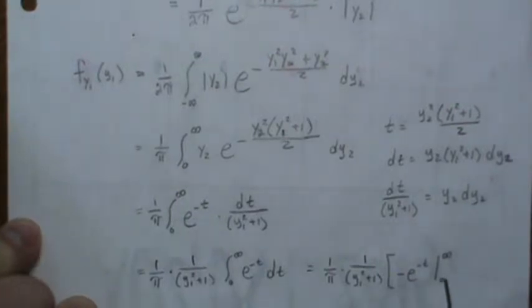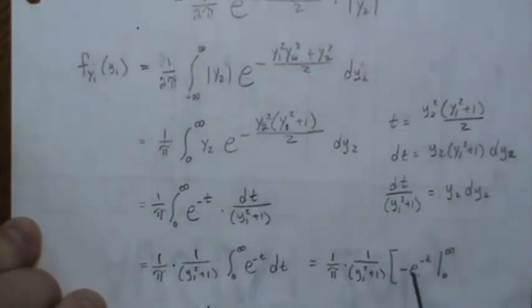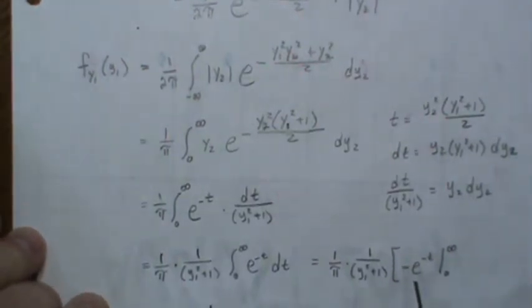That becomes minus e to the minus t, and then we plug in the limits of integration. Plug in infinity, it goes to zero, and then plug in this—you get a minus one. So minus and minus one is positive one.